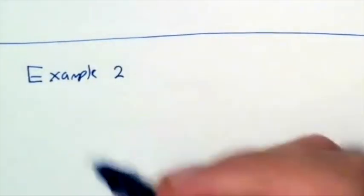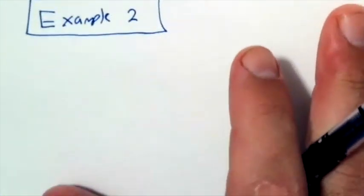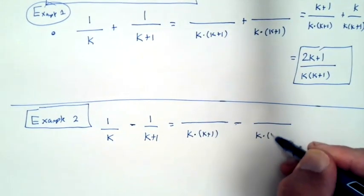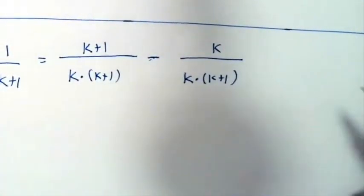It's similar if we subtract 1 over k minus 1 over k plus 1. We get the same common denominator and the same terms in the numerator, only now we're subtracting.